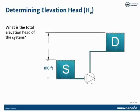To calculate the elevation head in the system, it is the height differential between the current elevation of the fluid and the final elevation the fluid is to be pumped, calculated from surface to surface. In the example shown here, from the surface of the suction tank to the upper surface of the discharge tank, the difference is 200 feet. Therefore, the elevation head in this system is 200 feet.